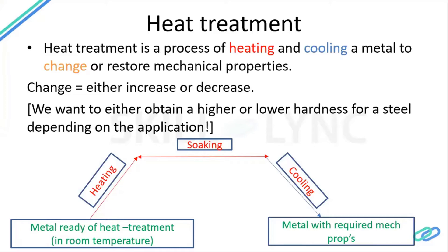In the soaking stage, the main objective is to hold the metal at the target temperature until the internal temperature has equalized throughout the part. As the flowchart shows: the metal starts at room temperature, you heat it, soak it, then cool it, and you get the metal with the required mechanical properties — which can be a higher or lower value than the original.